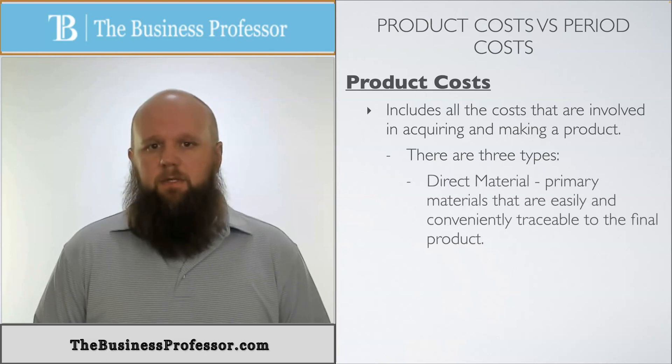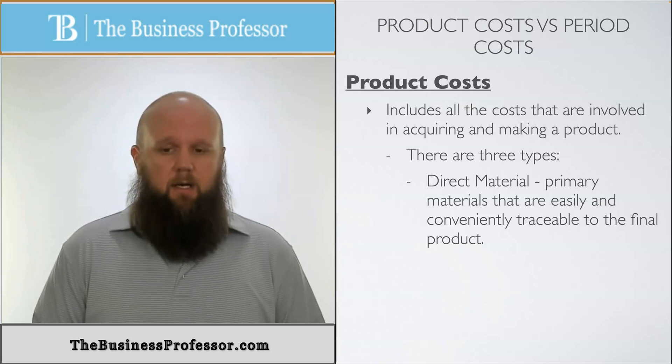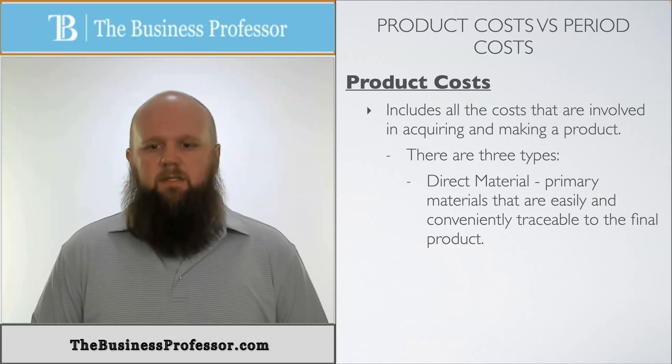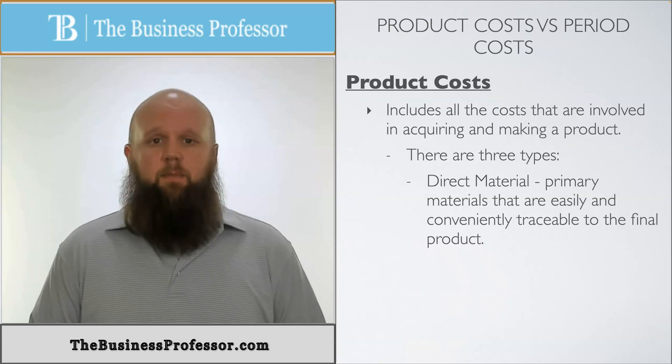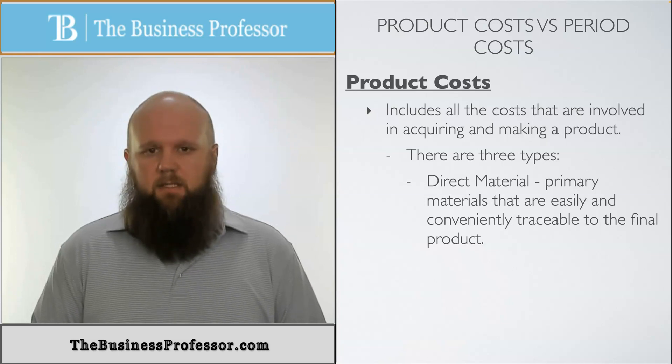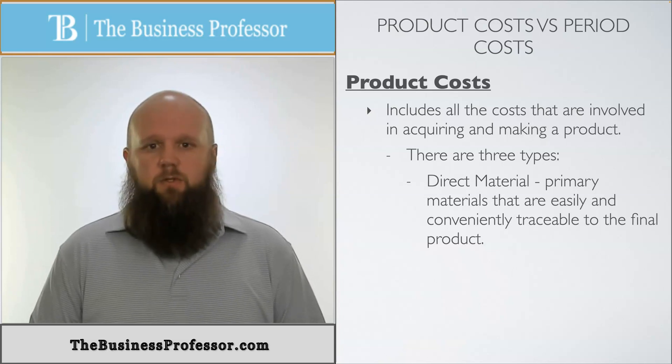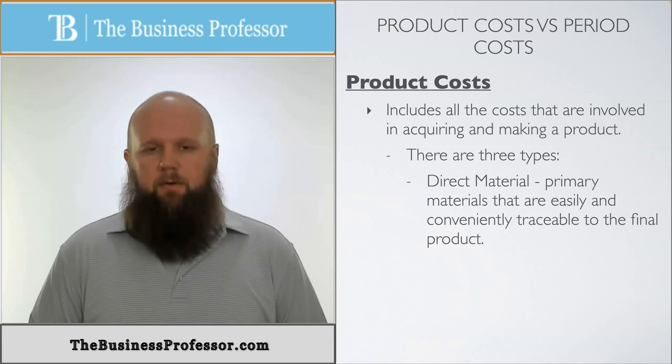The first one being direct material. Direct material, as the name implies, is a direct cost but it's also a product cost. These are the primary materials that are easily and conveniently traceable to the final product. For the example of the house, the lumber would be a direct material because the cost of the lumber is easily traceable to that one house, the final finished product.